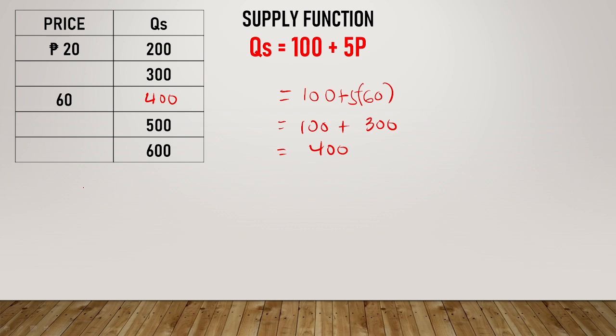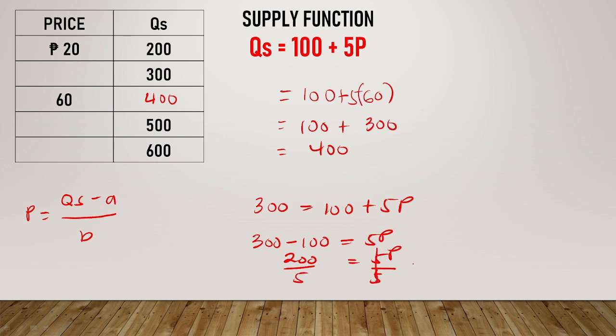Next, you will be solving for the price given the quantity supplied. Just share with you the formula for getting P. So P equals Qs minus a over b. So let's say for example, given quantity supplied is 300. So 300 equals 100 plus 5P. So 300 minus 100 equals 5P. 200 equals 5P. So P equals 40.